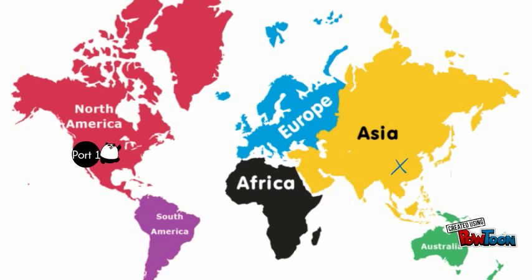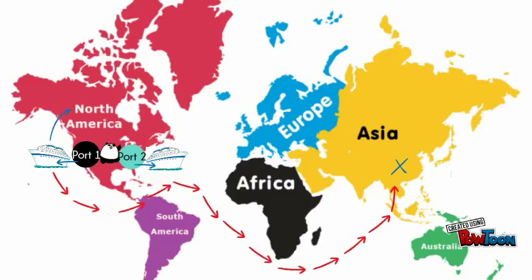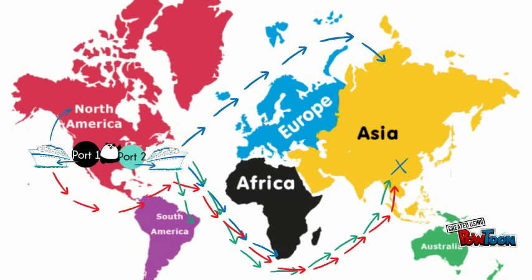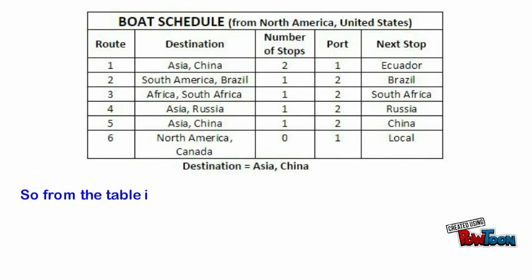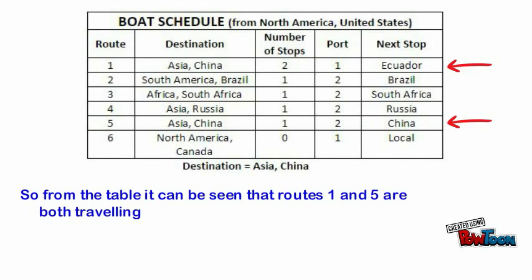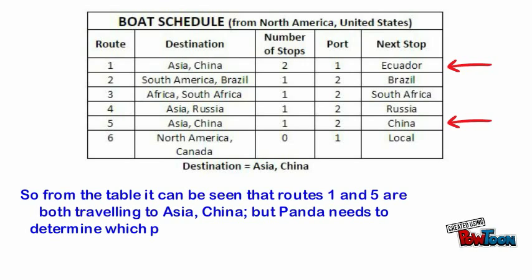From looking at the ship itinerary, Panda needs to find which ship route is going closest to his final destination while having the least number of stops in between. Mr. Panda can leave from port 1 on the west coast USA or port 2 on the east coast. He then will have to choose which route — from port 1 to Canada or China with an additional stop in Ecuador, or from port 2 to Brazil, Russia, South Africa, or China. From the table it can be seen that route 1 and 5 are both traveling to Asia, China, but Panda needs to determine which path will cost him less time and extra stops.